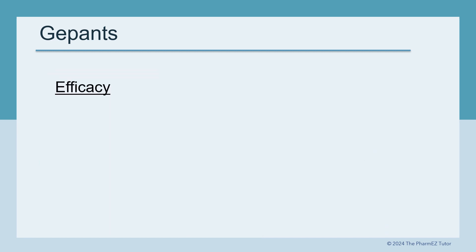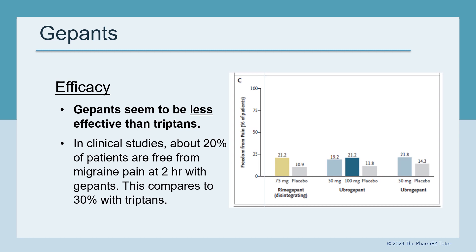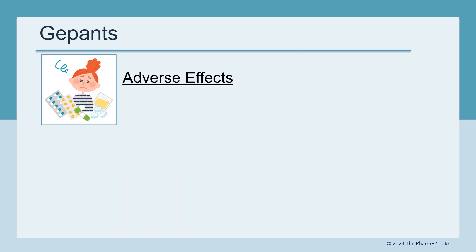What is the efficacy of these new G-PAN drugs? G-PANs seem to be less effective than triptans. In clinical studies, about 20% of patients are free from migraine pain at 2 hours with G-PANs, compared to 30% with triptans. Adverse effects of the G-PANs include dry mouth, nausea, dyspepsia, and somnolence.